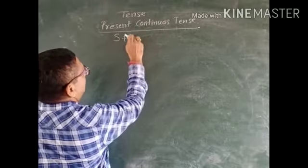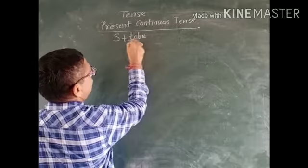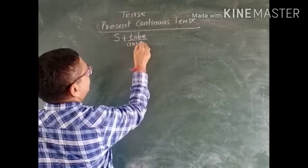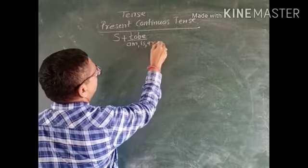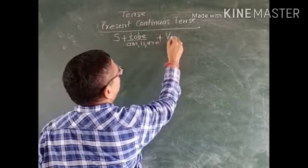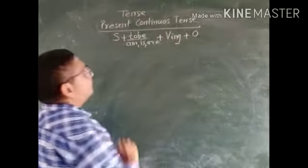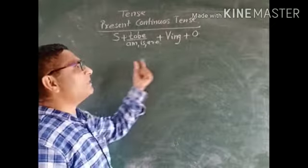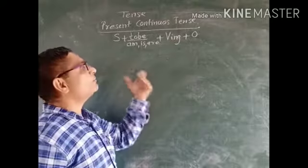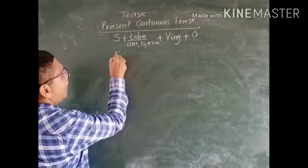Subject, then verb to be, that is auxiliary verb is or are, then verb in its ing form, then object. Now we will see the examples of these types of sentences or these types of tense words.